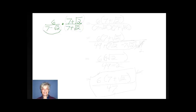If I were you, I would put parentheses around every numerator and denominator that has two terms. Now multiply the numerators together and multiply the denominators together. So on top we'll have 6 times parentheses 7 plus the square root of 2, and on the bottom we'll have 7 minus the square root of 2 times 7 plus the square root of 2. Let's FOIL the two-term denominators together, and meanwhile leave the top in factored form.